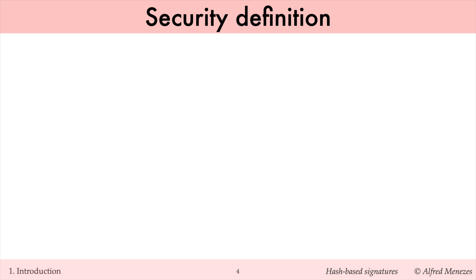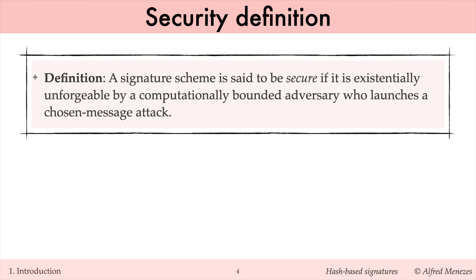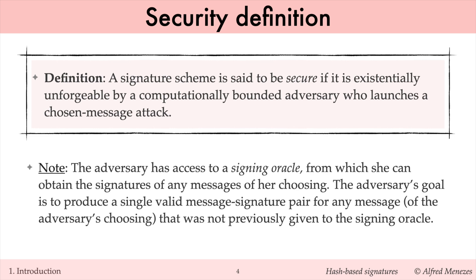Roughly speaking, a signature scheme is considered secure if an adversary cannot forge valid signatures without access to the signer's private key. More precisely, a signature scheme is said to be secure if it is existentially unforgeable under chosen message attacks. In a chosen message attack, the adversary can obtain signatures for arbitrary messages of the adversary's choosing. Formally, the adversary is given a signing oracle. Existential forgery means that the adversary's goal is to produce a single valid message-signature pair for any message that the adversary did not previously give to the signing oracle. This strong notion of security ensures that even with access to many signed messages, an adversary cannot produce new unauthorized signatures.